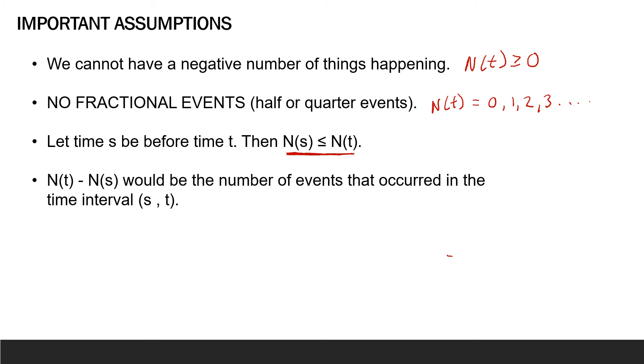The last assumption is on the same note of time s is less than time t. On this note, N(t) minus N(s), where s is less than t, would be the number of events that have occurred in the time interval s to t. So, if we wanted to visualize this, where we denote s is less than t on this time scale, and N(t) is on the y-axis, then the number of events that have occurred in the time interval s to t is this jump here. So, let's say that up until time s, we have observed 2, and then at time t, we have observed 5. Because this is accumulating the number of events, then the number of events that have occurred between s and t is just 5 minus 2, or 3.